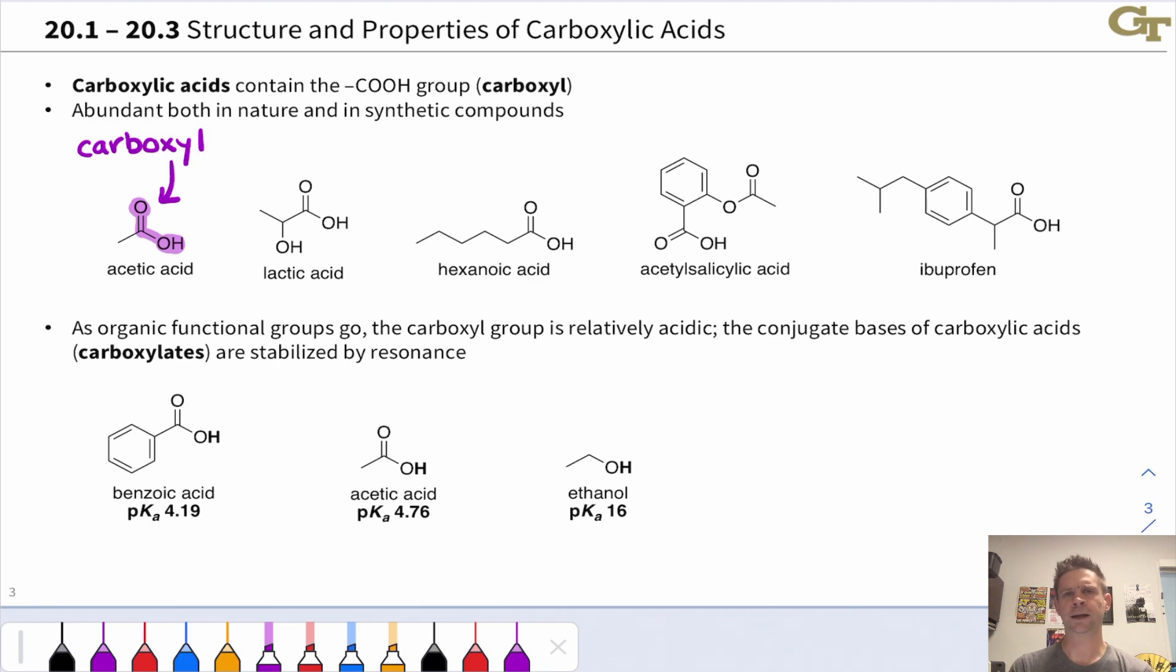The carboxylic acid shows up in a wide variety of compounds and as the name suggests, this is an acidic functional group. It's not terribly acidic but the pKa is definitely lower than most organic functional groups. For example, benzoic acid has a pKa of about 4.2 and acetic acid has a pKa of 4.76.